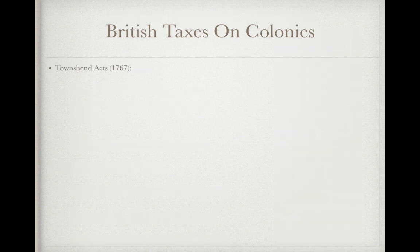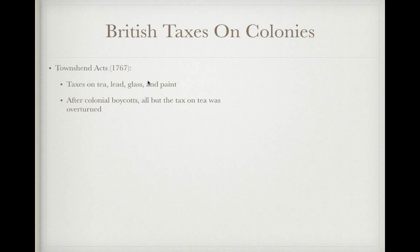Two years later in 1767, we have the Townshend Act, named after Charles Townshend. This was a tax on tea, lead, glass, and paint. After colonial boycotts again, all but the tax on tea was overturned — goodbye lead, goodbye glass, goodbye paint taxes. Tea would still remain, and we'll come back to that.